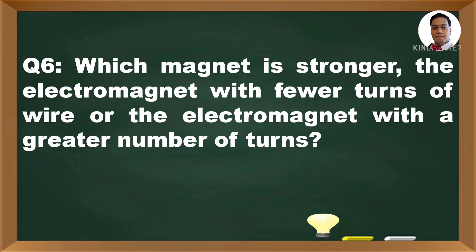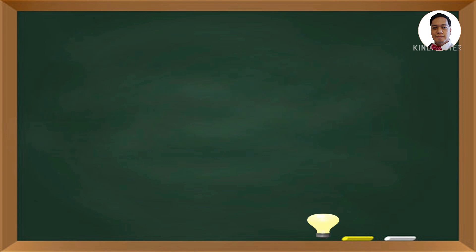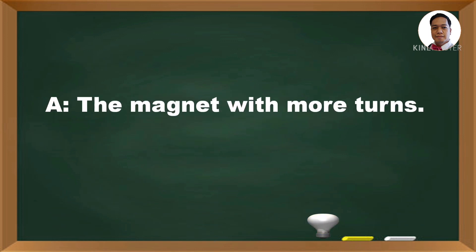Question number 6: Which magnet is stronger? The electromagnet with fewer turns of wire? Or the electromagnet with a greater number of turns? The answer is, the magnet with more turns.